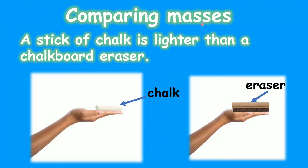In this picture we can see an arm — on one side the hand is holding a piece of chalk, and on the other side the hand is holding a chalkboard eraser. A stick of chalk is lighter than a chalkboard eraser. We can determine the weight by just holding two objects together and trying to determine which object is lighter or which object is heavier, as we shall be seeing in our examples.